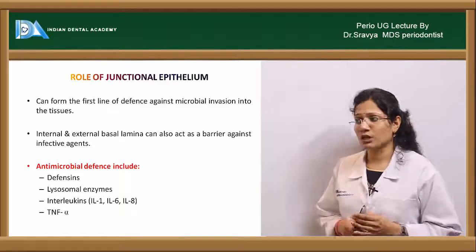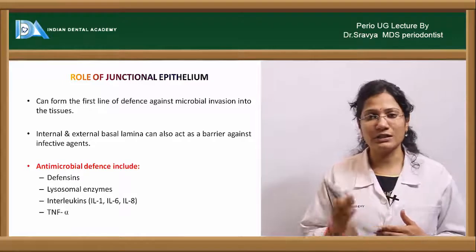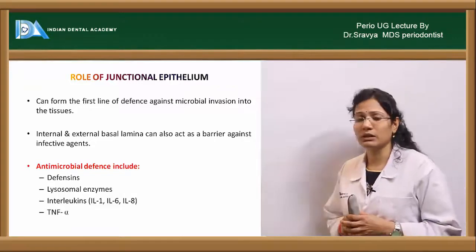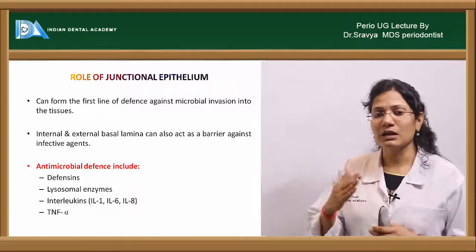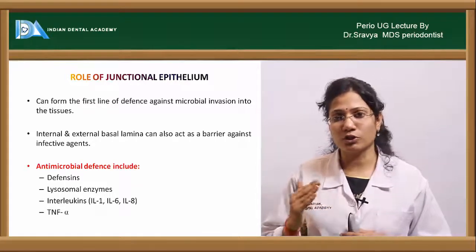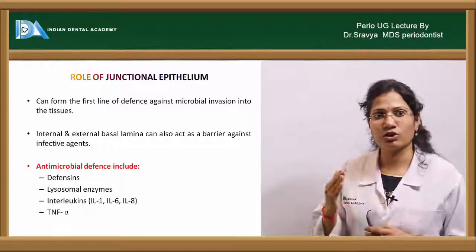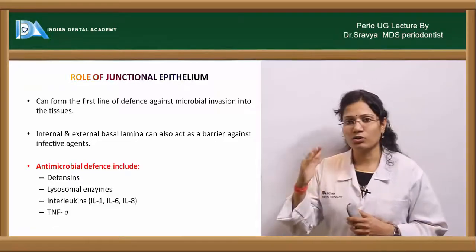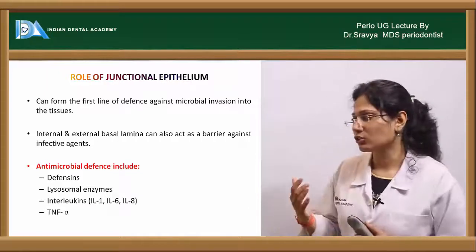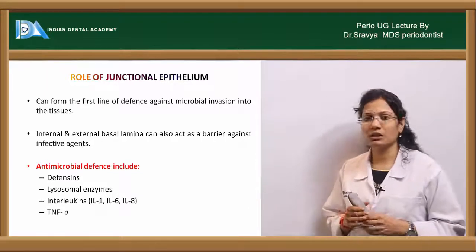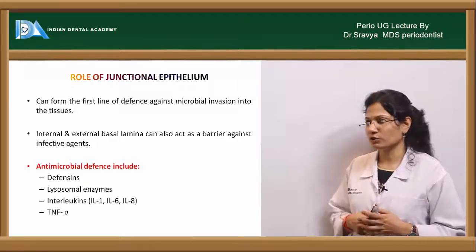The junctional epithelium is the first line of defense against gram-negative or microbial invasions into the tissues. The coronal limit of the junctional epithelium is right below the gingival sulcus, and the apical extent is just at the cemento-enamel junction. This junctional epithelium is the only epithelial attachment that binds the tooth with the soft tissue.